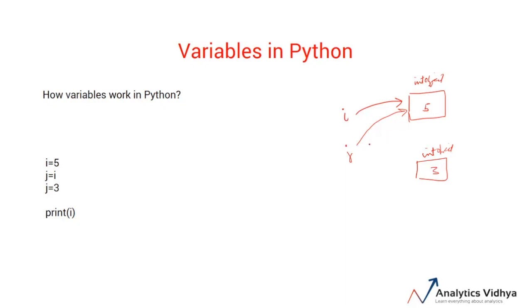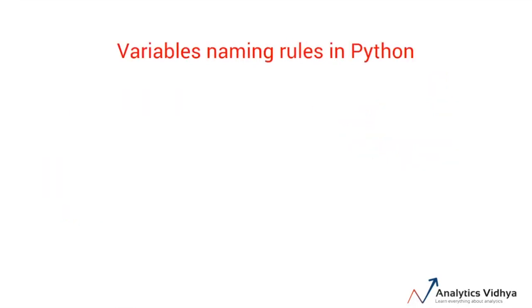So when you print i, i is still pointing to this object, so in this case it will print i as 5. So this is how variables work in Python.